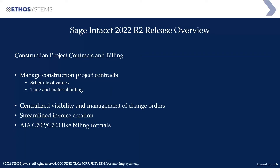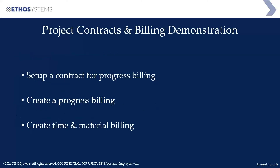In the construction module, we now have construction projects and billings. You can manage construction projects whether they involve schedule-of-value progress billings or time and material billings. It gives you visibility into change order management, streamlines invoice creation, and lets you create AIA G702/G703-like billing formats. Now I'm going to show you how to set up a contract for progress billing and a time and material billing inside Sage Intacct.